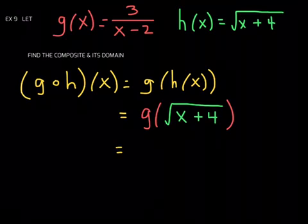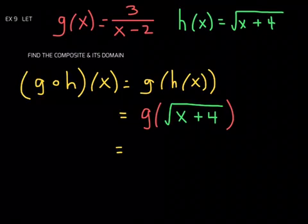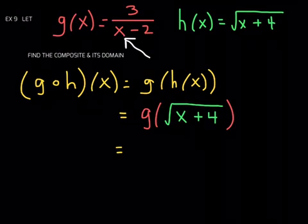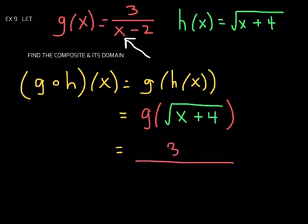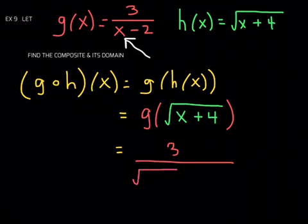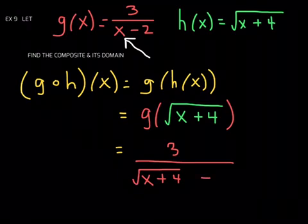This notation means that we need to plug the square root of x plus 4 into function g. Function g is over here, and the input variable is right there. So we want to replace that input variable x with this expression, the square root of x plus 4. So it'll be 3 over, replacing x with the square root of x plus 4, and then don't forget you got a minus 2 down there.